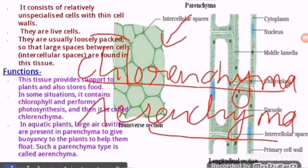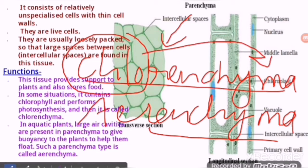Chlorenchyma — the 'chloro' term comes from chloroplast being present in it. Because chloroplast is present, photosynthesis is performed. The parenchyma which performs photosynthesis is called chlorenchyma.